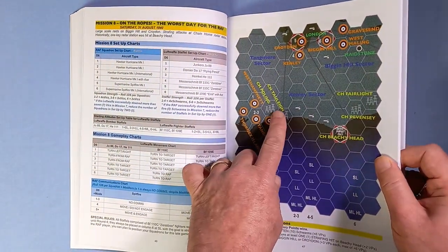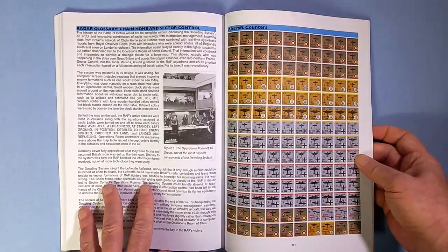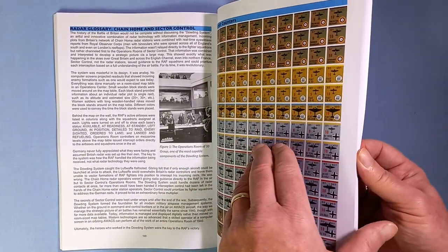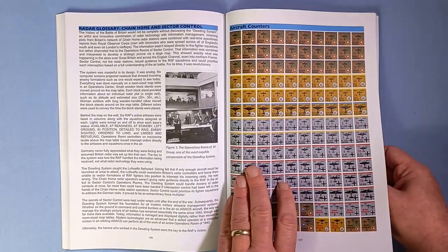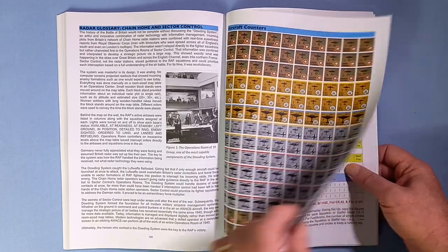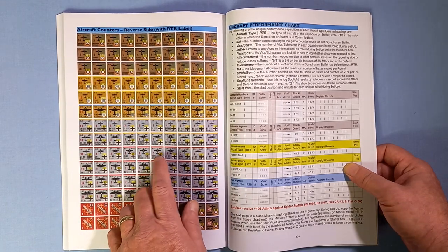And then the counters. But don't worry, you don't have to bend this back to photocopy - they are on Board Game Geek. So that's all the counters, not a great deal. They're double-sided. On the other side we've got the RTB side - return to base.